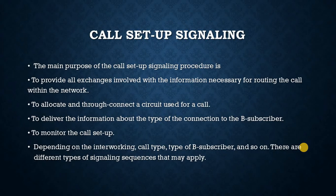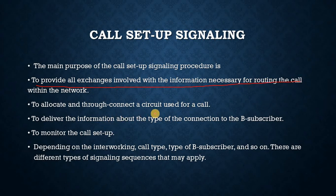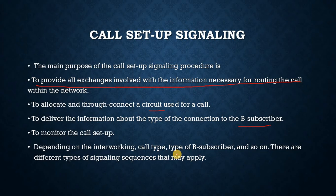Call setup signaling. The main purpose of the call setup signaling procedure is: to provide all exchanges involved with the information necessary for routing the call within the network; to allocate and through-connect a circuit used for a call; to deliver information about the type of connection to the B subscriber; and to monitor the call setup. Depending on the interworking call type, type of B subscriber, and so on, there are different types of signaling sequences that may apply.